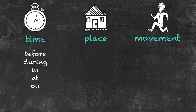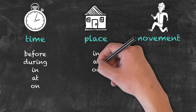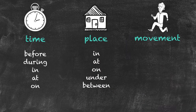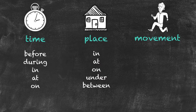We have prepositions of place: in, at, on, under, and between. For example, if I said 'the book is under the table,' I'm showing a relationship between the table and the rest of the sentence.